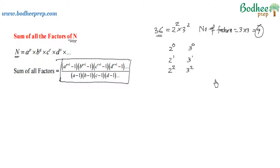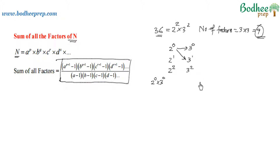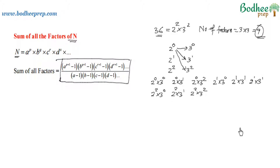The total combinations will be 9, and we need to find the sum of all these factors. What I can do is take all these combinations and add them to get the sum of all the factors. If I take 2 to the power 0 with 3 to the power 0, then the factor would be 2 to the power 0 into 3 to the power 0. Similarly, 2 to the power 0 with 3 to the power 1 gives the next factor as 2 to the power 0 into 3 to the power 1, and then 2 to the power 0 into 3 to the power 2. I have written all 9 factors which are possible.